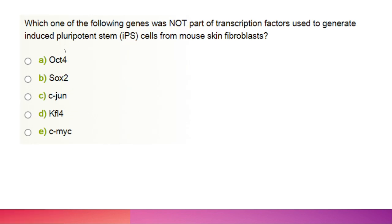Which gene was not part of the transcription factor cocktail used to generate induced pluripotent stem (iPS) cells from mouse skin fibroblasts? The correct option is C: c-Jun. c-Jun is the name of the gene — spelled J-U-N.